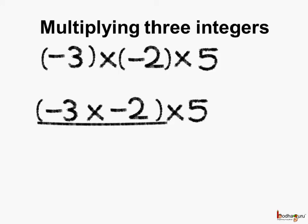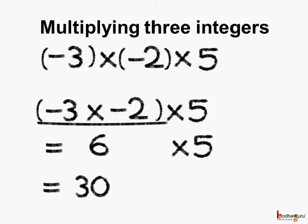Minus 3 multiplied by minus 2: here 3 multiplied by 2 is 6, and we know minus multiplied by minus becomes plus, so the answer is plus 6. This problem gets reduced to plus 6 multiplied by 5, which is equal to 30.